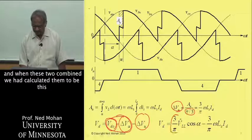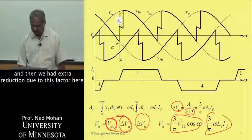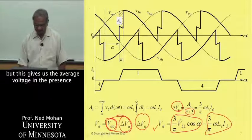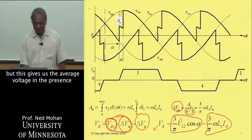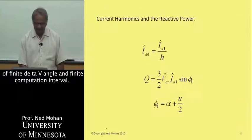We start with this VD0, and when these two combine, we had calculated them to be this, and then we have extra reduction due to this factor over here. So this gives us the average voltage in the presence of finite delay angle and finite commutation interval.